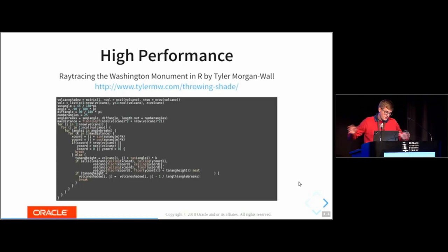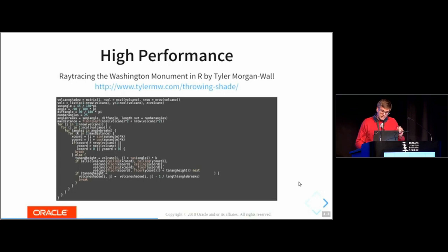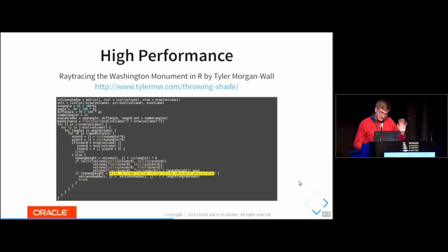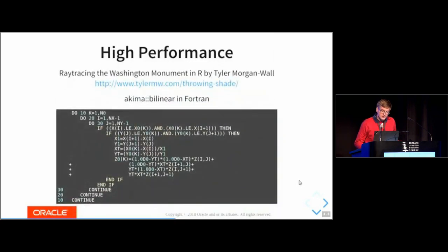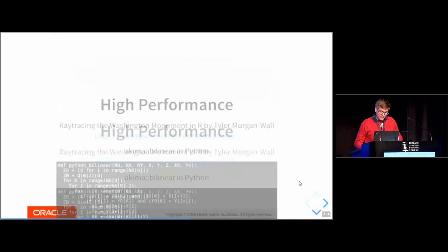What about performance? These cross-language solutions usually have poor performance because they use different programs and communicate through pipes or similar mechanisms. In this case we're running on the same platform. I was showing the ray tracing code by Tyler Morgan-Wall — pure R code using a Fortran function. In the FastR talk I rewrote that Fortran function in R. Here, I've rewritten the whole inner function into Python.